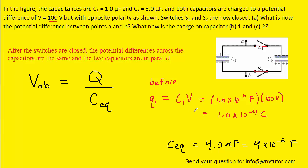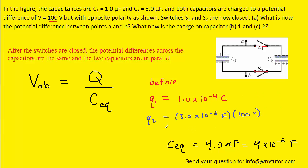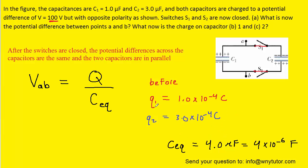We will perform a similar calculation to find the charge on capacitor two. When we perform that calculation, we can see that the total charge on capacitor two is 3 times 10 to the minus 4 coulombs.